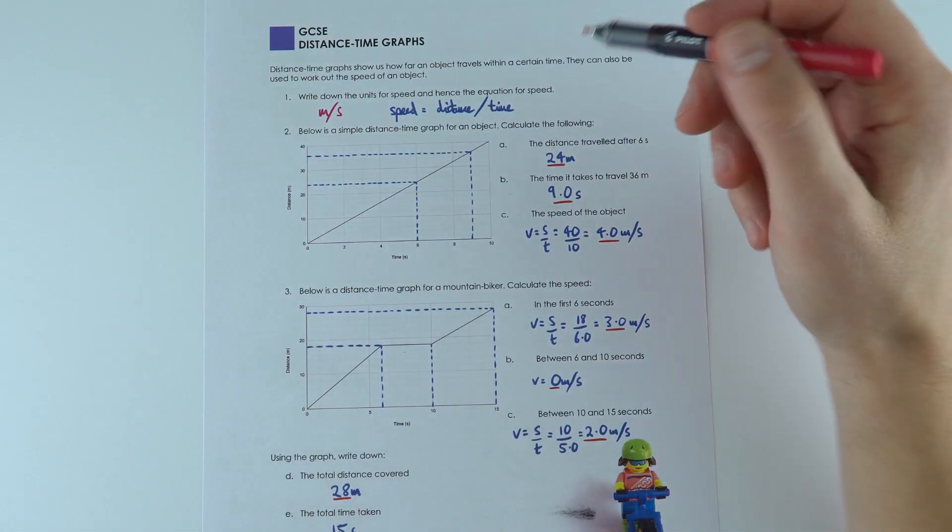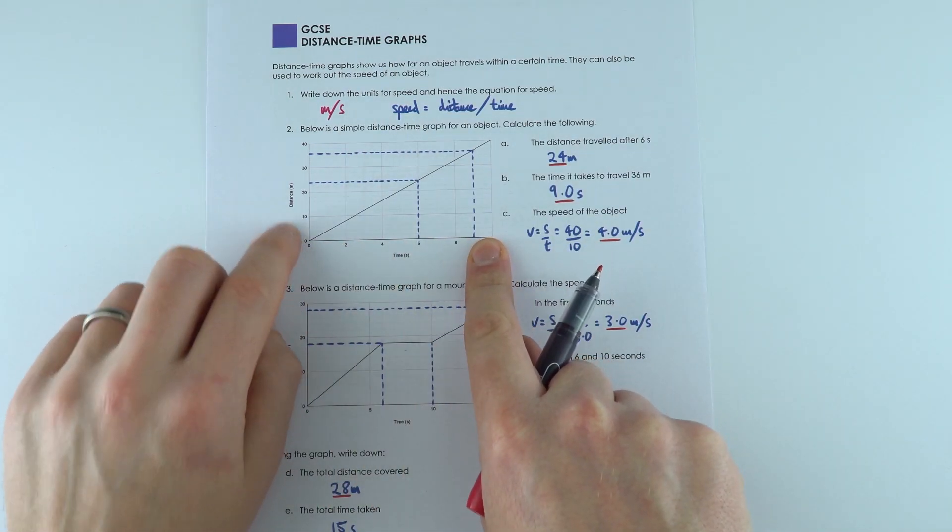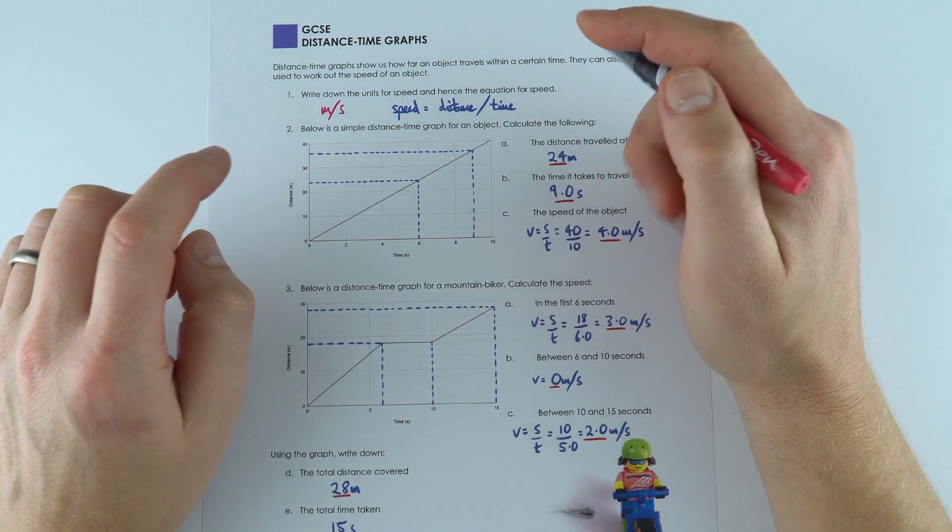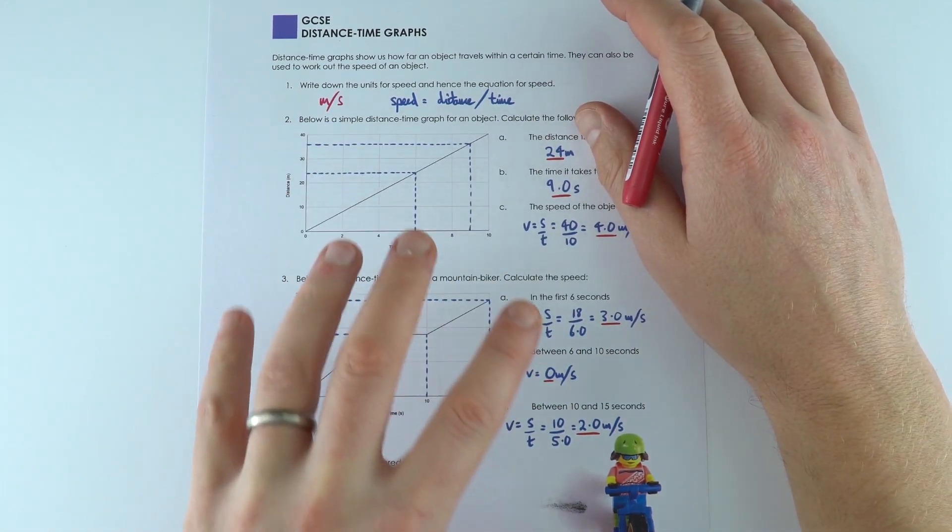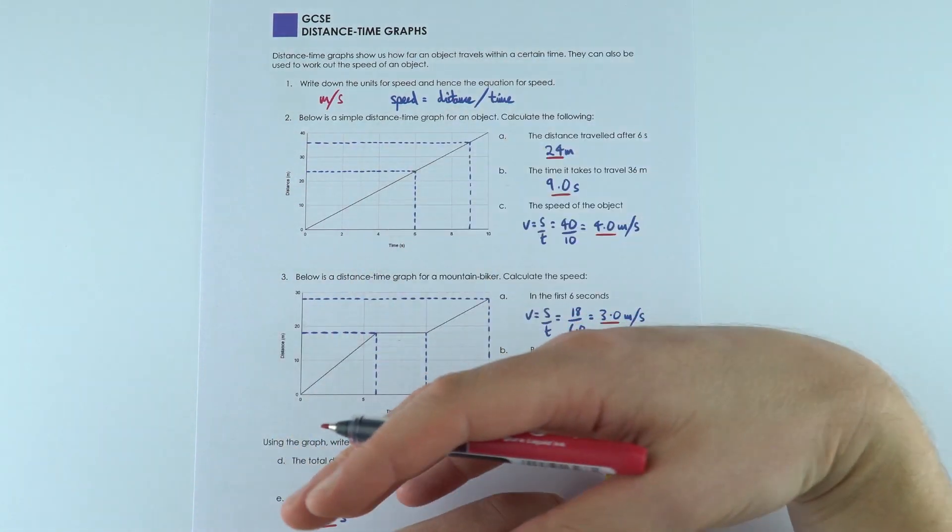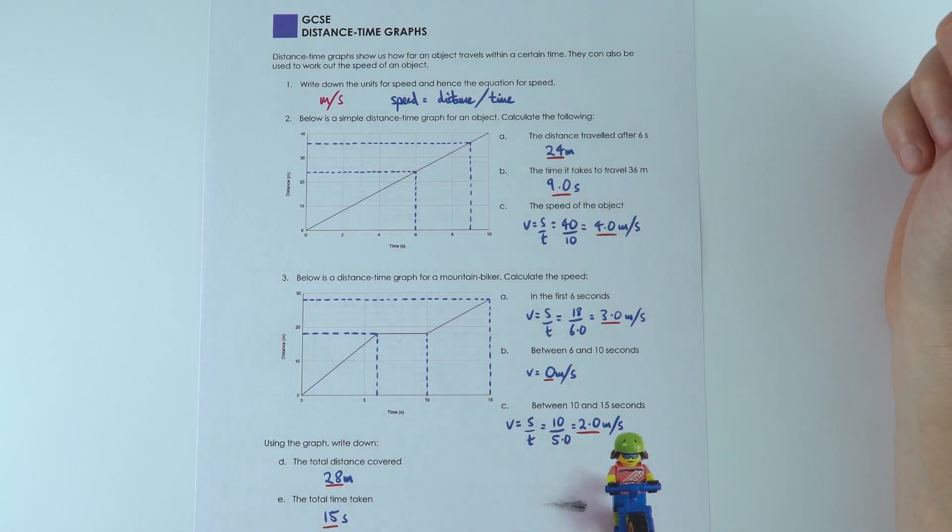These questions are about distance-time graphs where on the bottom we always have the time and up the side we have the distance. Normally we give our distance in meters and our time in seconds. A lot of the questions you get at GCSE they're not about you plotting your own data, but it's more about interpreting data given to you from the graph.